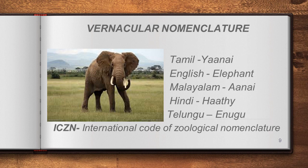There are more than 6,000 different languages in the world. In India alone, there are 22 official languages and thousands of local languages. This means the same organism may get more than 6,000 different names. To avoid this confusion, scientists planned to give one particular common name for each species that should be followed throughout the world — and that is why they assign scientific names.